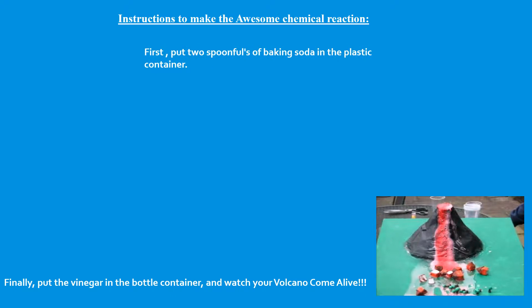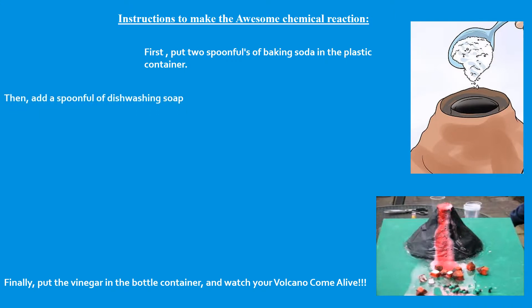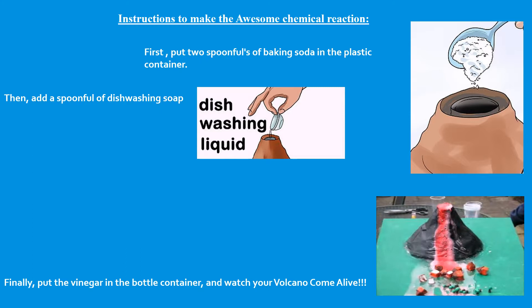First, put 2 spoonfuls of baking soda into the plastic container. Then add a spoonful of dishwashing soap. After that, add about 5 drops each of the red and yellow food coloring.